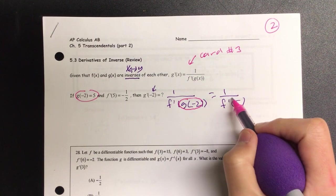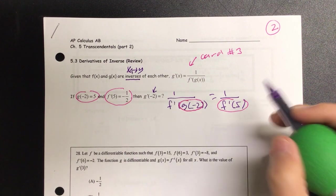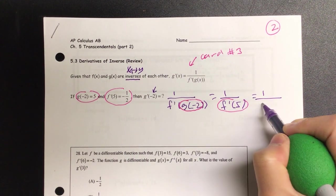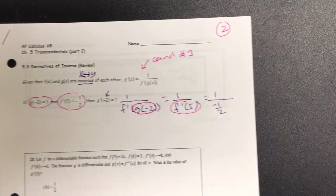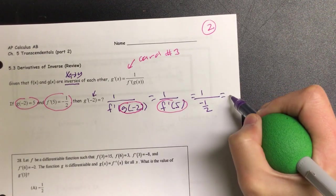And is f'(5) given to us? Definitely. So that's going to give us 1 all over negative 1 half. And if it's a multiple choice, it's not going to be a fraction over a fraction, but what? Negative 2.